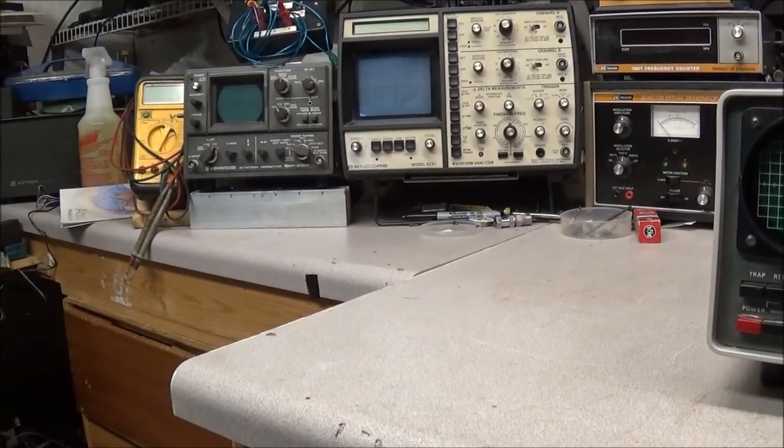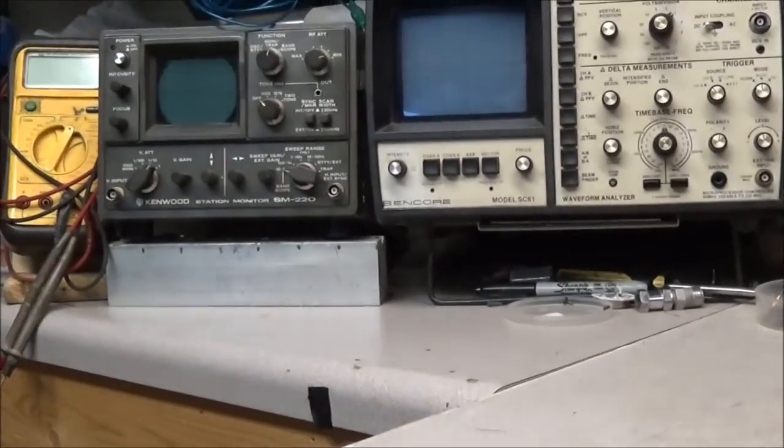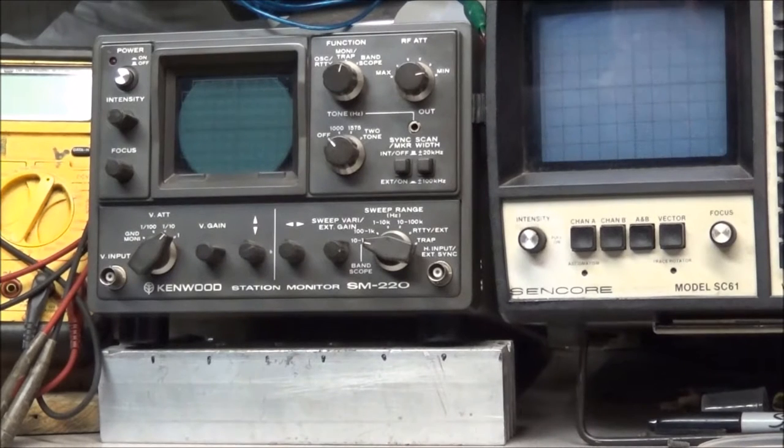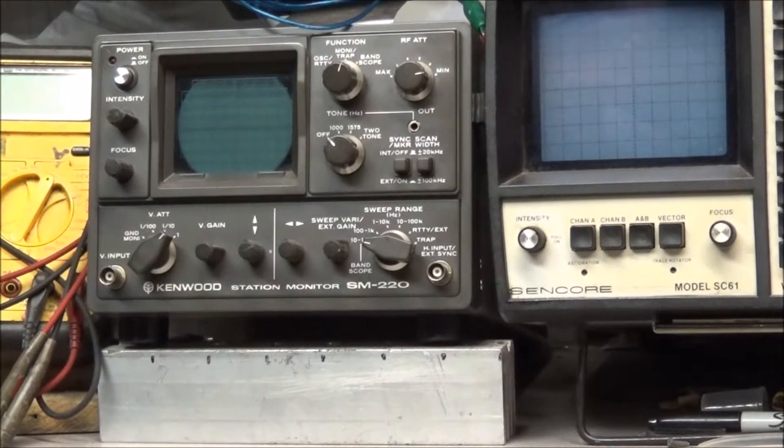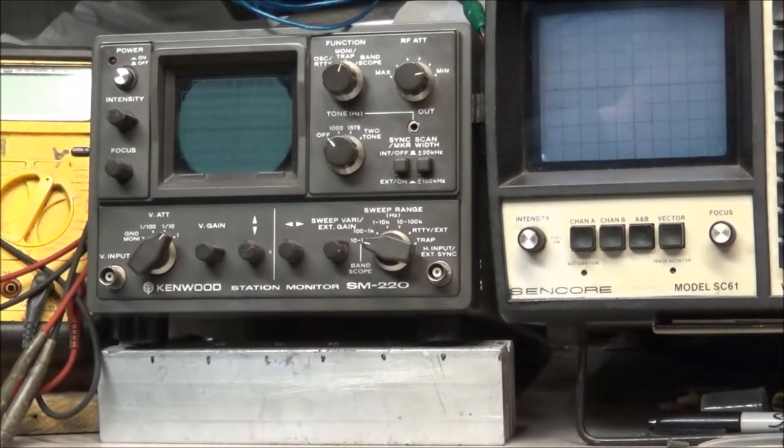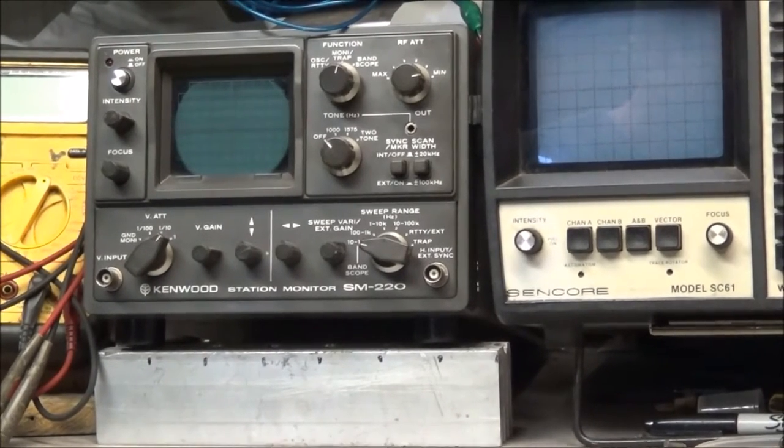I have the Kenwood SM220 that I use from time to time, especially when I'm changing the RF finals in an amateur radio that uses solid state finals. Once you set the bias on the transistor, you can go back and look at the signal and really fine-tune it and get it looking better. That way you have a clean signal going out on the air.